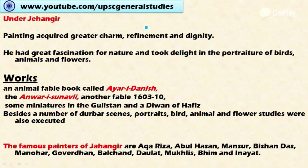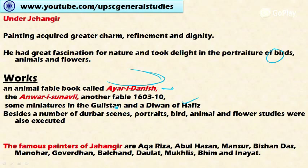Under Jahangir, painting acquired its greatest charm, refinement, and dignity. He had a great fascination for nature and took delight in portraiture of birds, animals, and flowers. An important work compiled during his time was the Iyar-i-Danish. Anwari Suhalvi, miniatures in Gullistan, and the Divan of Hafiz are also associated with this period. Besides these, a number of Darbar scenes and portraits of birds, animals, and flowers were executed.